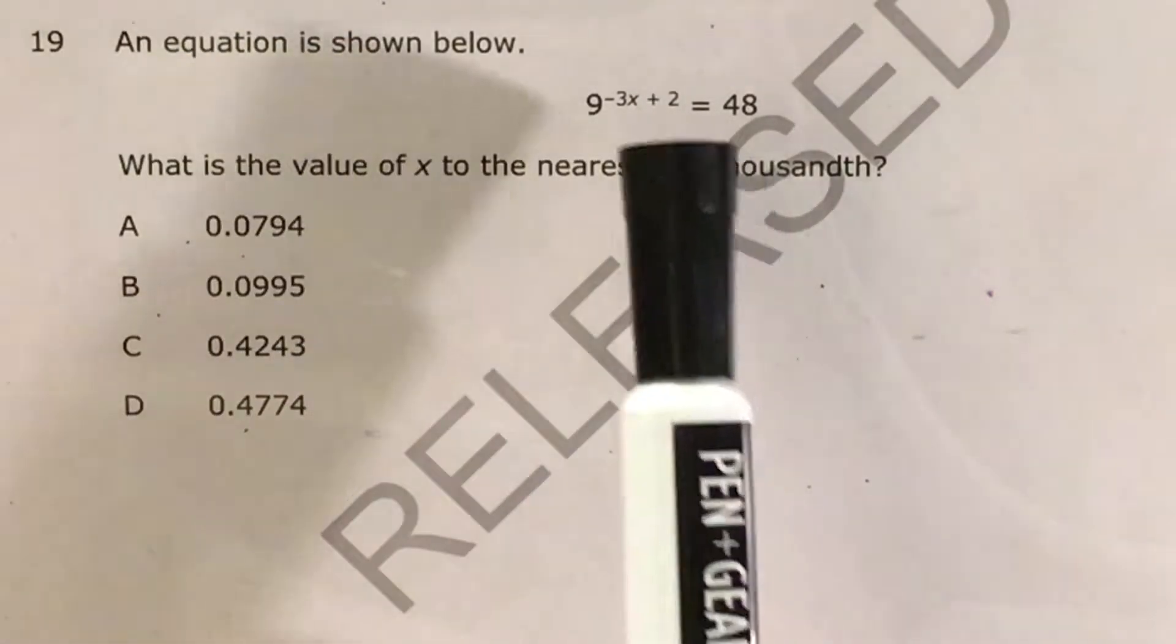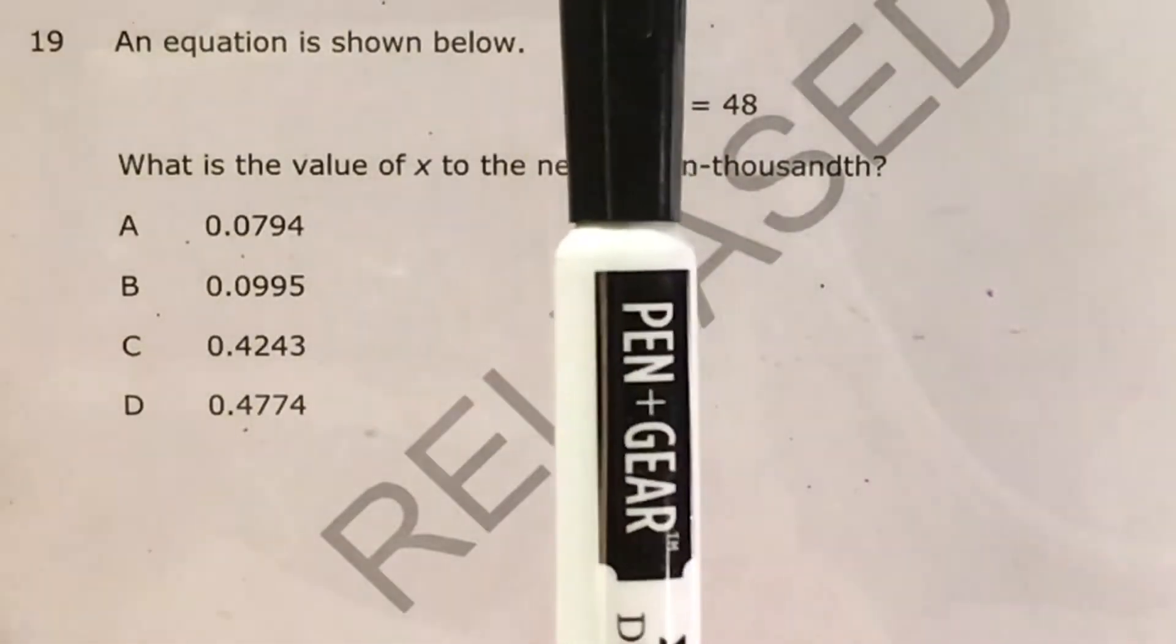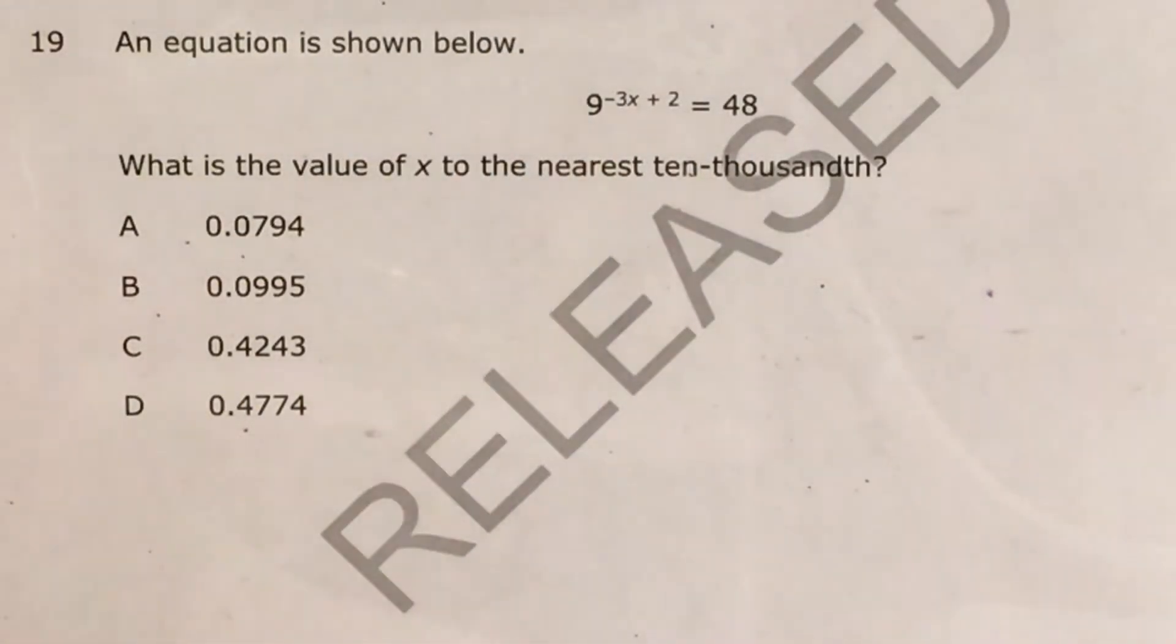The question gives us an equation but it's a weird kind of equation where we have a variable inside an exponent and we're supposed to solve that equation.